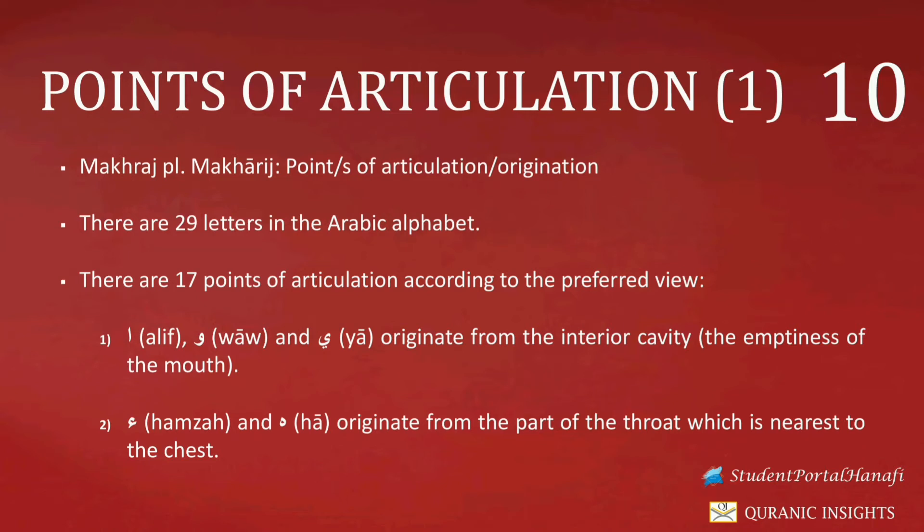We now continue on to these 17 points of articulation, these 17 makhaarij. The first makhraj is the point of articulation for three letters. Letter number one is Alif, letter number two is Wao Madda, and letter number three is Ya Madda.